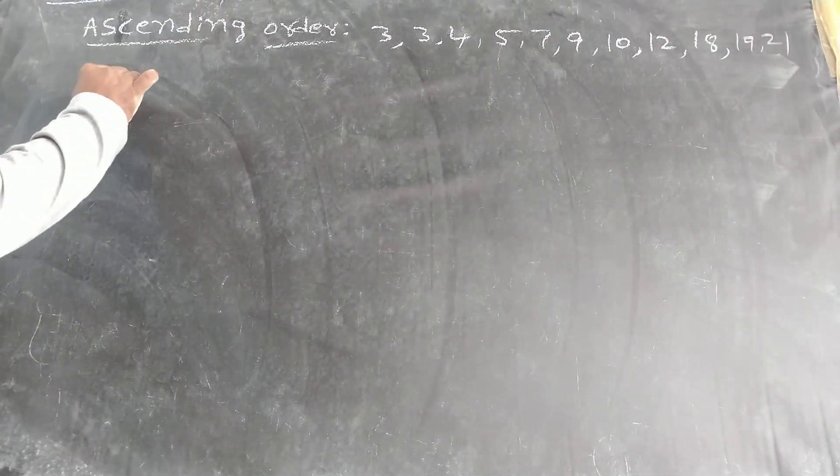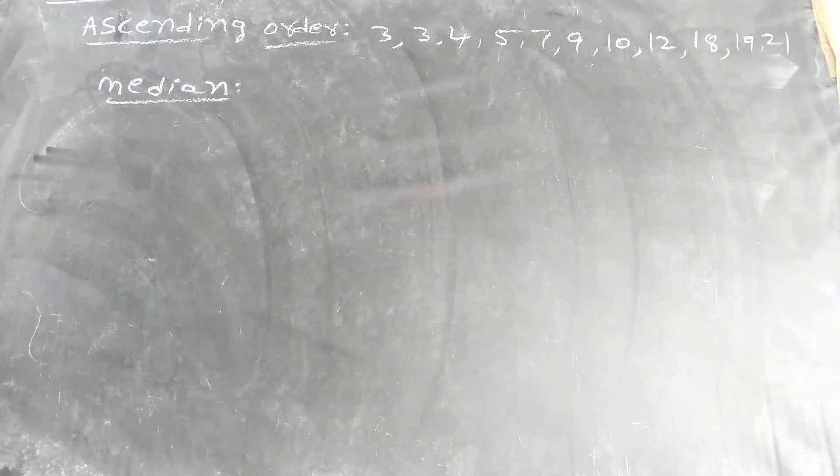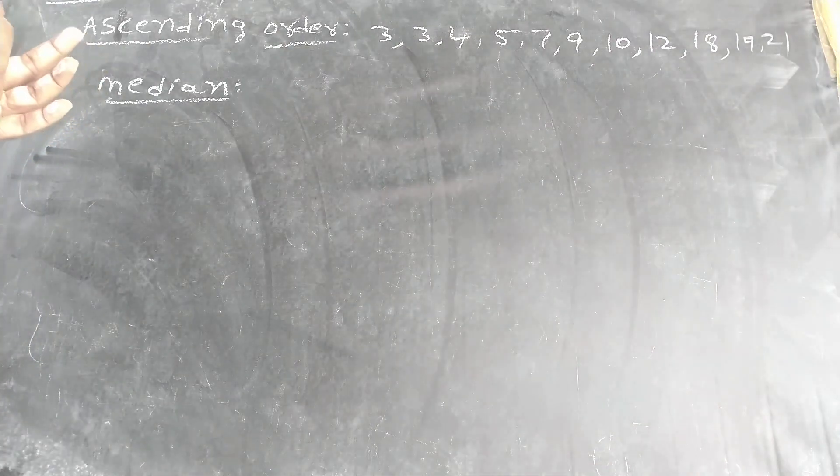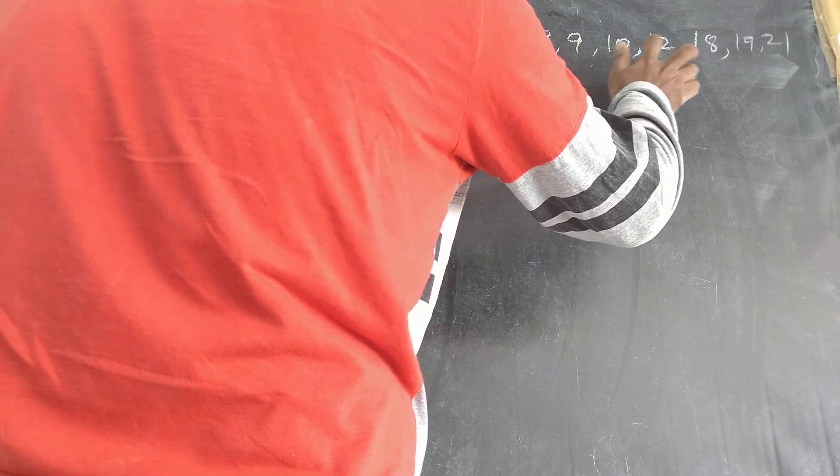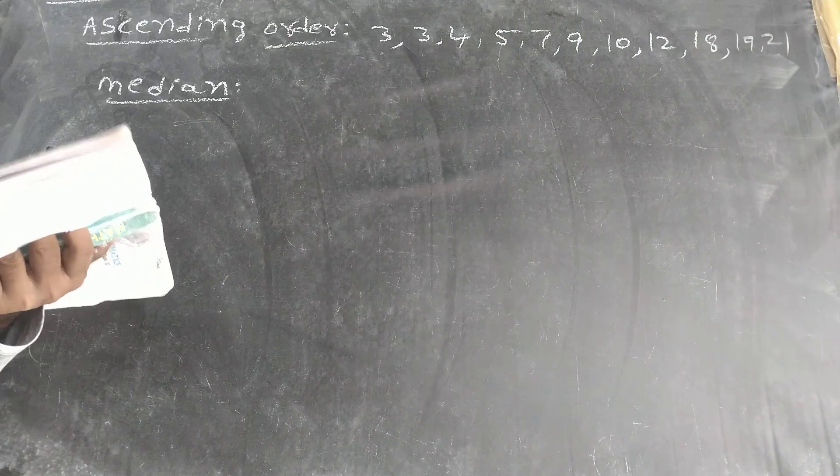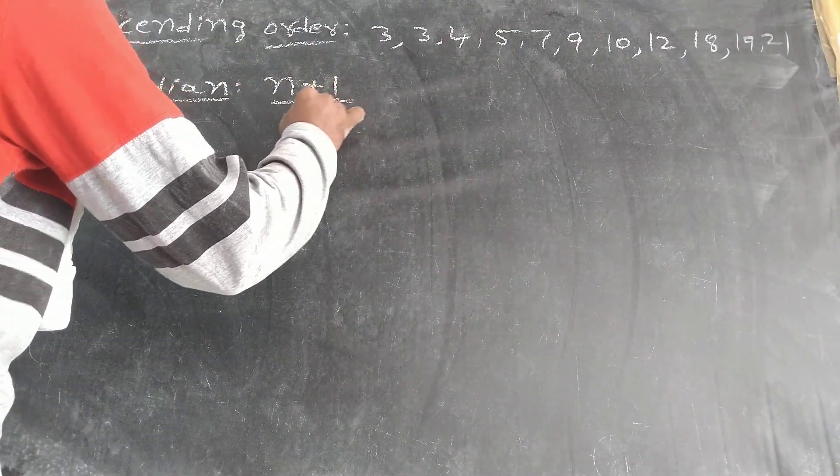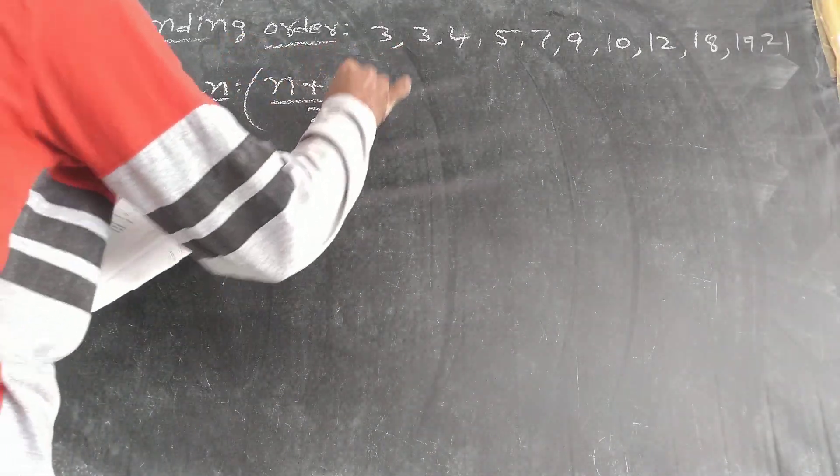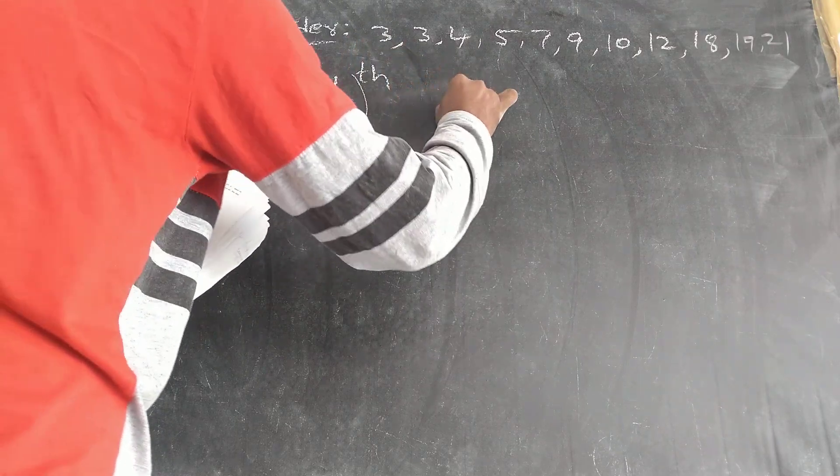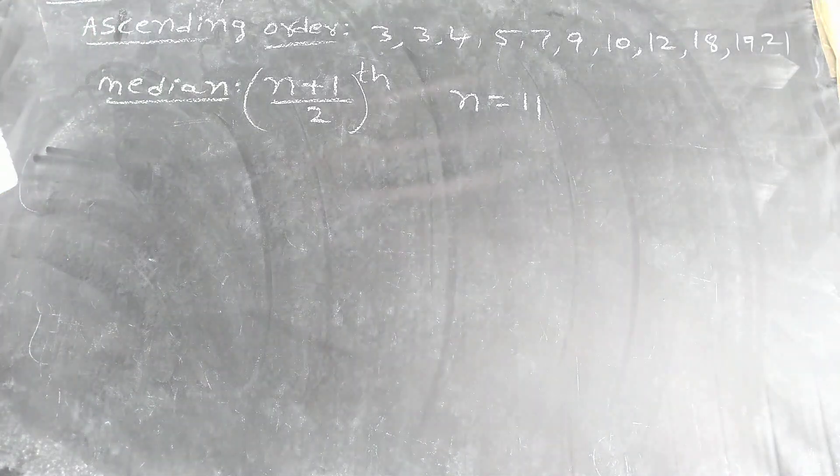What you can find? Median. Median means first you have to check even number or odd number. So 1, 2, 3, 4, 5, 6, 7, 8, 9, 10, 11. 11 means median, what is the formula? N plus 1 by 2. N plus 1 by 2. So N equals how many? How many terms are there? So N equals 11. You have to count the numbers. N equals 11.